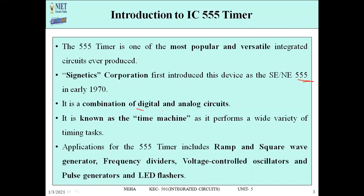It is a combination of both digital and analog circuits. In the circuit diagram, you will see that digital and analog circuits are combined to design a timing circuit. It is also known as a time machine because it performs a variety of timing tasks. Applications include ramp and square wave generators, frequency dividers, voltage controlled oscillators, pulse generators, LED flashers, microwave ovens, and washing machines.